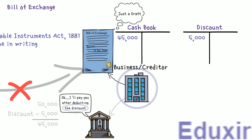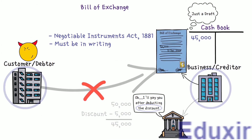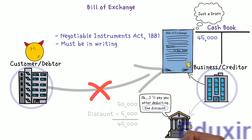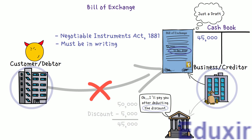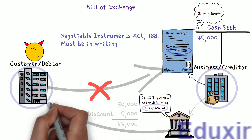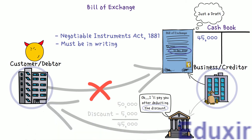The purpose of discounting the bill is to get the amount immediately, allowing the business to proceed with day-to-day operations rather than waiting until the date of maturity. When the date of maturity arrives, the bank will collect the total amount from the debtor or payer. That is a brief introduction to the bill of exchange. Now, with this information at our disposal, let us proceed with the analysis of each of the details in the problem.